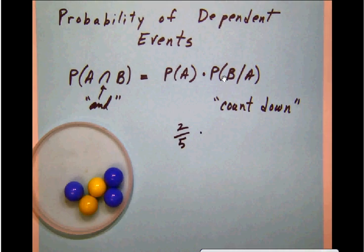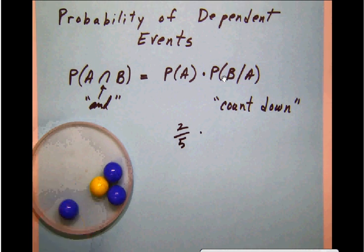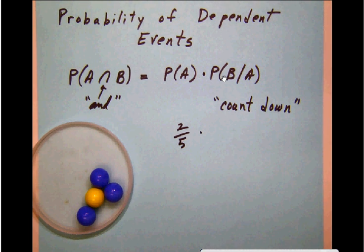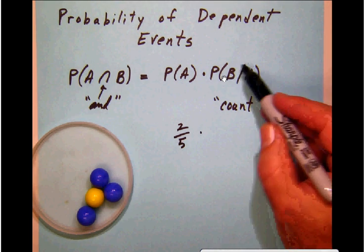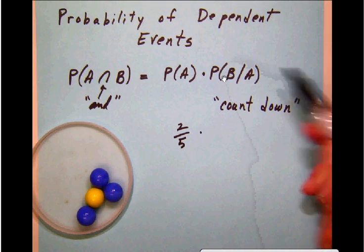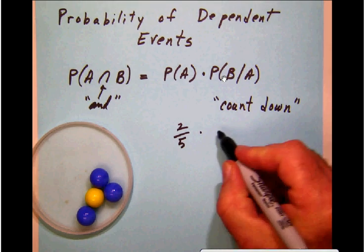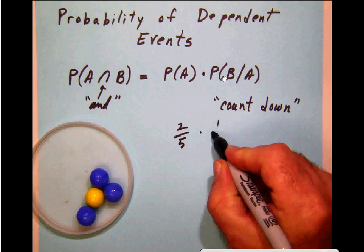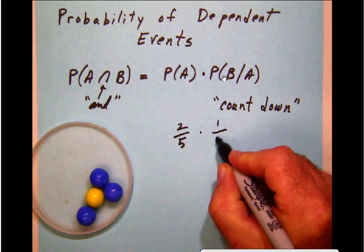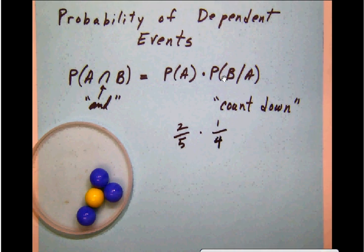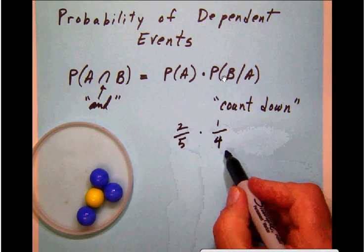Then we're going to take a yellow marble out. This assumes that when we make the draw, we do in fact get what we want. That's what this symbolism is telling us. We're going to count down because there's only one yellow marble left and there are only four marbles total.